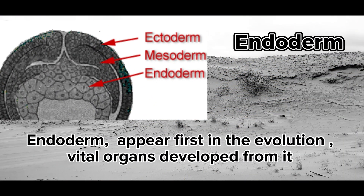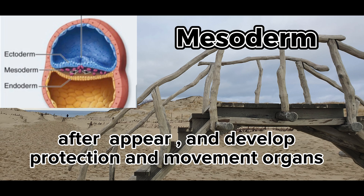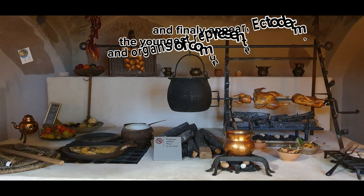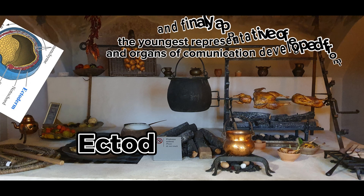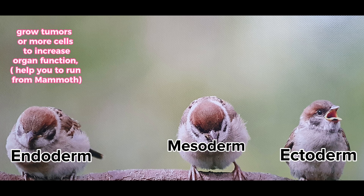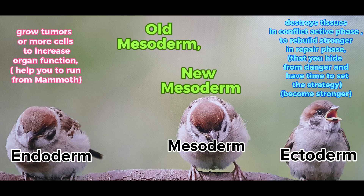Endoderm appeared first in evolution; vital organs develop from it. Mesoderm appeared after, and protection and movement organs develop from it. And finally appeared ectoderm — the youngest representative of evolution — and organs of communication develop from it. Organs developed from the endoderm grow tumors or more cells to increase organ function to help you run from a mammoth. Organs developed from the ectoderm destroy tissues in the conflict active phase, to rebuild stronger in the repair phase, so that you can hide from danger and have time to set the strategy and become stronger. Mesoderm is divided into old mesoderm and new mesoderm, because some of its organs still behave according to the endoderm model, and some organs behave according to the ectoderm model.